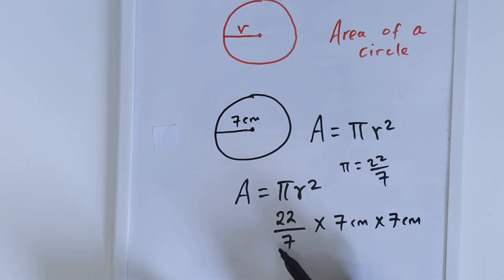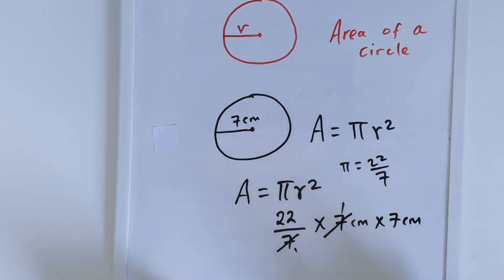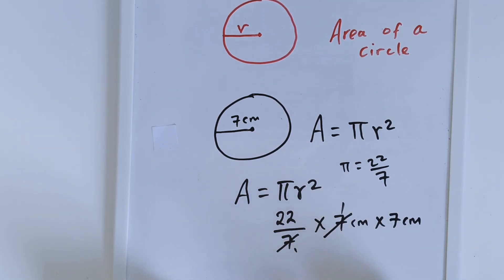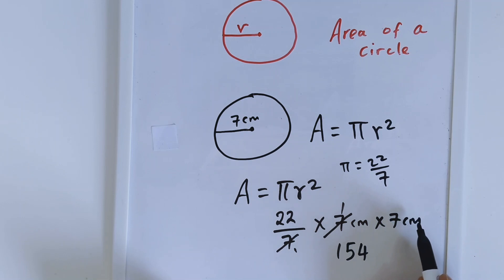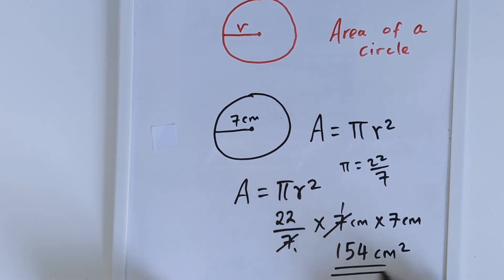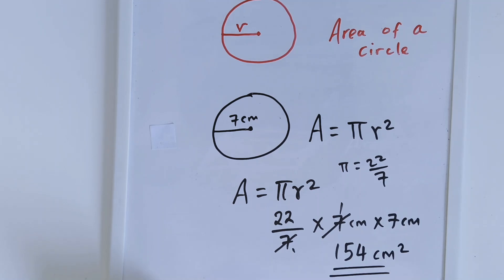That will give me — you cancel 7 here, and 7 is also 1. So, 22 times 7 gives me 154, but the units are cm times cm, so that gives me cm squared. The area of this circle is 154 cm squared.